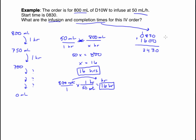So we get 2430 — let's think about that. Starting at 830 in the morning and adding 16 hours, we know that once we hit 2400 we are into the next day. In military time, 24 hours represents a full day. So 2430 is equivalent to 0030 of the next day. The infusion time is 16 hours and the completion time is 0030.